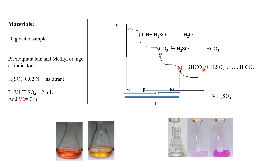We add some drops of phenolphthalein to the water. Because of alkalinity, the water turns purple. We then titrate the water with sulfuric acid until we reach the p-point. At this point, both hydroxide and carbonate have been titrated and the water becomes colorless.